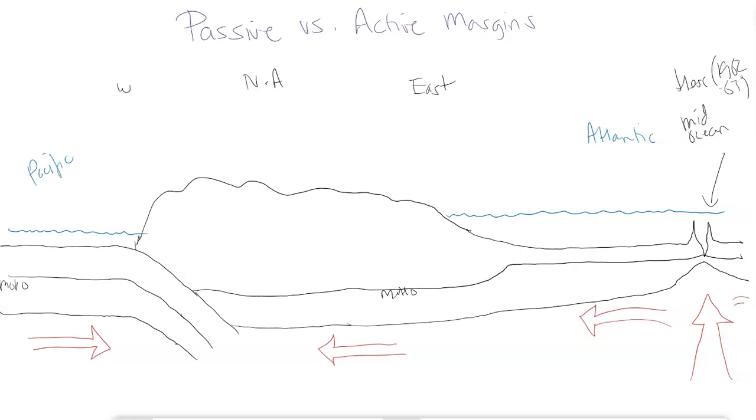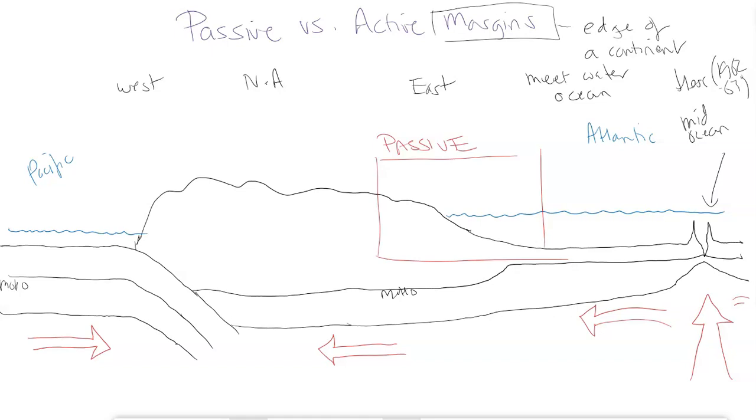So we're talking about the margin. A margin really is the edge of a continent and it's where it meets water or in this case two big oceans. There are two types of margins as shown by the title: there's passive and there's active. So let me identify them. This area right here in this box would be our passive type of margin, and over here in this box would be our active. I have isolated the area around where the continent meets the ocean and we call this a margin.